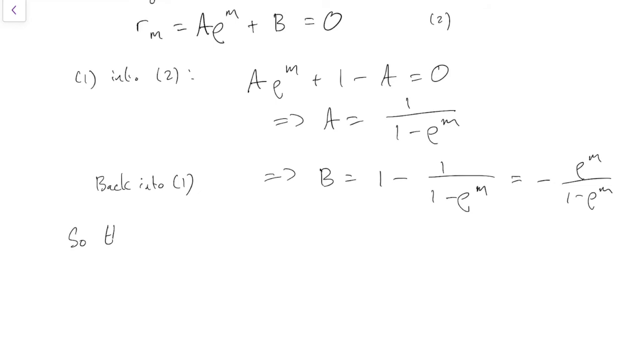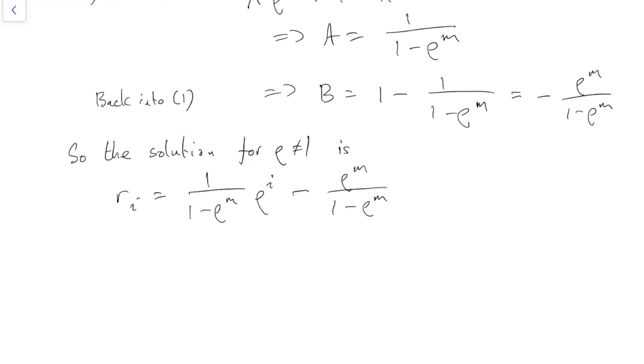And so substituting all that in, we get the solution for rho not equal to 1 is ri equals 1 over 1 minus rho to the m times rho to the i, plus 1 minus 1 over 1 minus rho to the m, which is rho to the i minus rho to the m over 1 minus rho to the m. And so that's the solution when rho is not equal to 1.